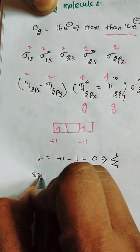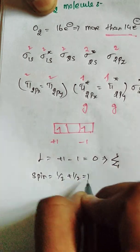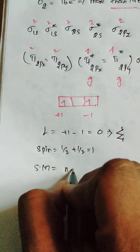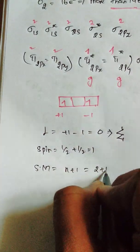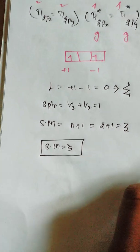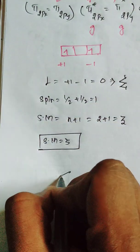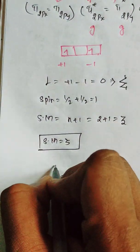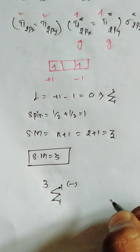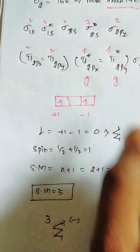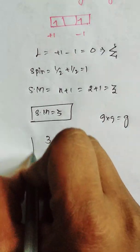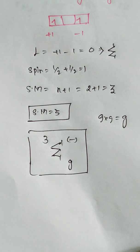For the spin: the two unpaired electrons each contribute +1/2, so S equals 1. Spin multiplicity equals 2S+1 equals 3. The last electrons are in pi* orbitals, so we use the minus superscript. Both last electrons are in gerade orbitals: gerade multiplied by gerade gives gerade. Therefore the ground state molecular term symbol for O2 is ³Σg⁻.